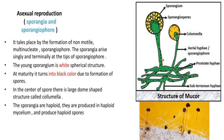Asexual reproduction takes place by the formation of non-motile, multinucleated sporangiophores. The sporangia arise singly and terminally at the tip of the sporangiophore. The young sporangium is white and spherical; at maturity it turns black due to the formation of spores. In the center of the sporangia there is a large dome-shaped structure called the columella.